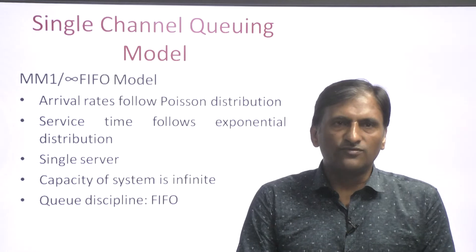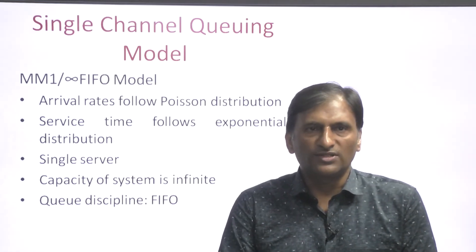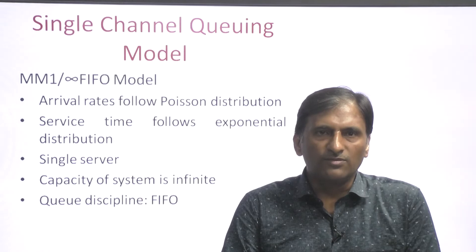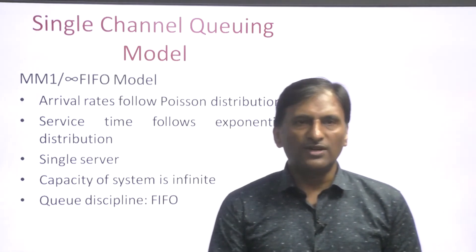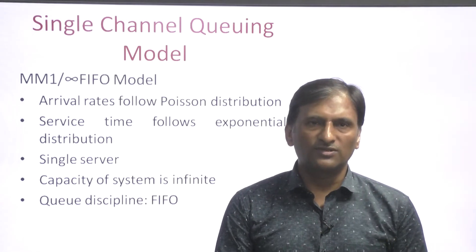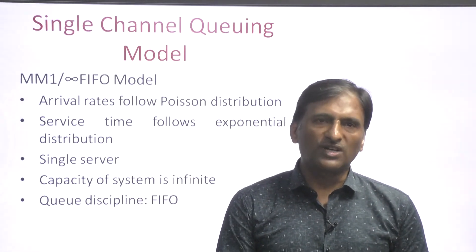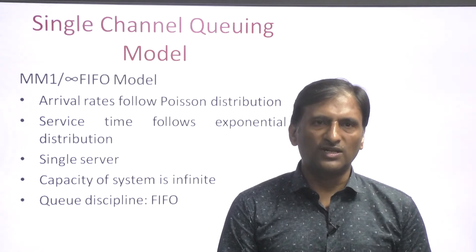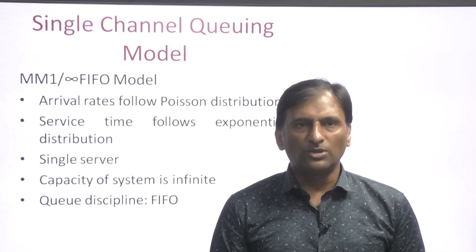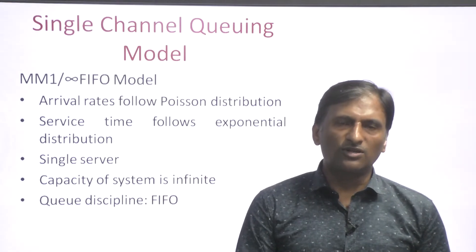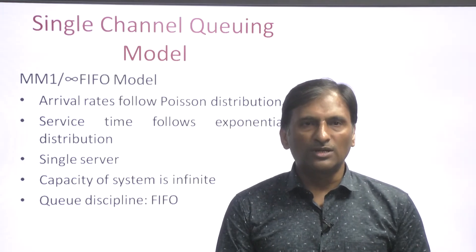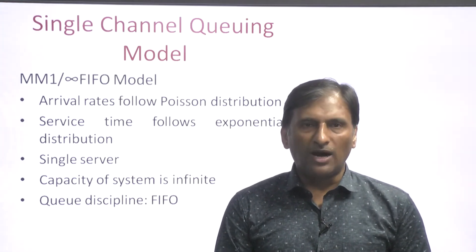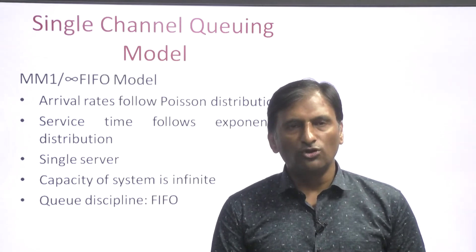The mean arrival rate follows the Poisson distribution. The second M represents that the service time follows an exponential distribution.